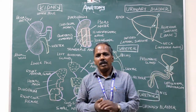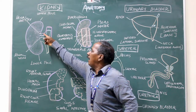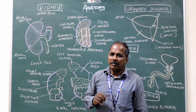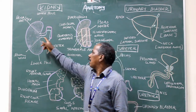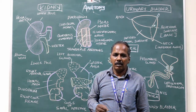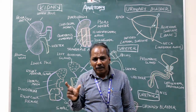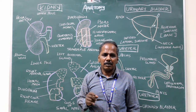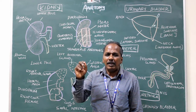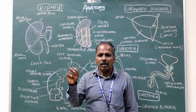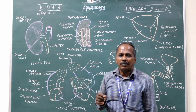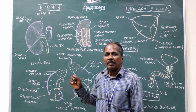Blood supply. Right and left renal artery — it is a direct branch from the abdominal aorta. Venous drainage: right and left renal vein, which drains into the inferior vena cava. Nerve supply: sympathetic and parasympathetic. The sympathetic fibers arise from T10, T11, T12, and L1 segments of the spinal cord. Parasympathetic supply is from the vagus nerve.